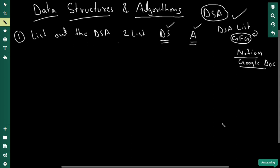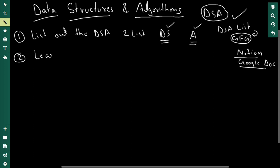After you've listed out the DSA that you're going to learn, the actual work begins. The next step is learning a programming language. I strongly suggest you to either learn C++ or Java — or both. People also suggest Python, but I strongly suggest you not take Python and instead take C++ and/or Java.